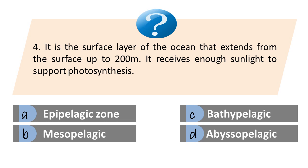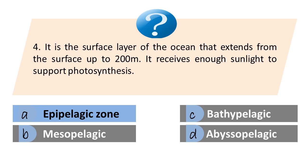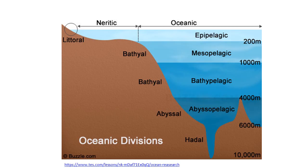It is the surface layer of the ocean that extends from the surface up to 200 meters and receives enough sunlight to support photosynthesis. A. Epipelagic zone. B. Mesopelagic zone. C. Bathypelagic zone. D. Abyssopelagic zone. The answer is A. Epipelagic zone. The oceanic divisions include epipelagic, mesopelagic, bathypelagic, and abyssopelagic, divided based on depth.